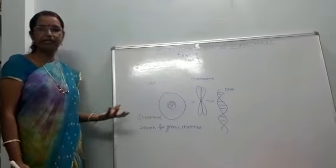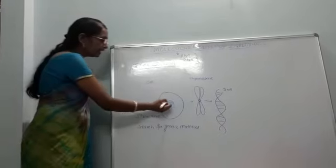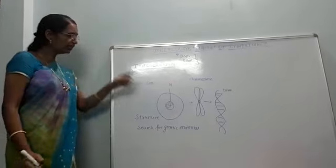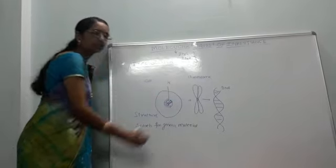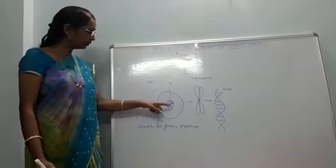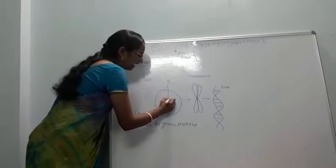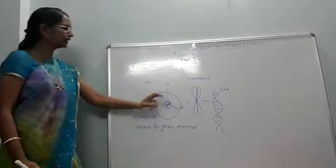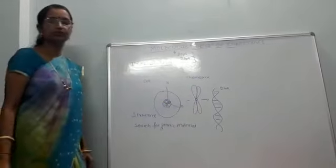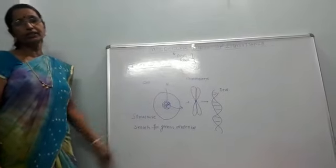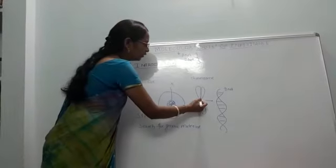Our body is made up of a number of cells, and within each cell there lies a nucleus. Within the nucleus, some thread-like structures are present, and those structures are known as chromosomes. If you isolate the nucleus outside the cell and look under the microscope, you will observe the chromosomes.